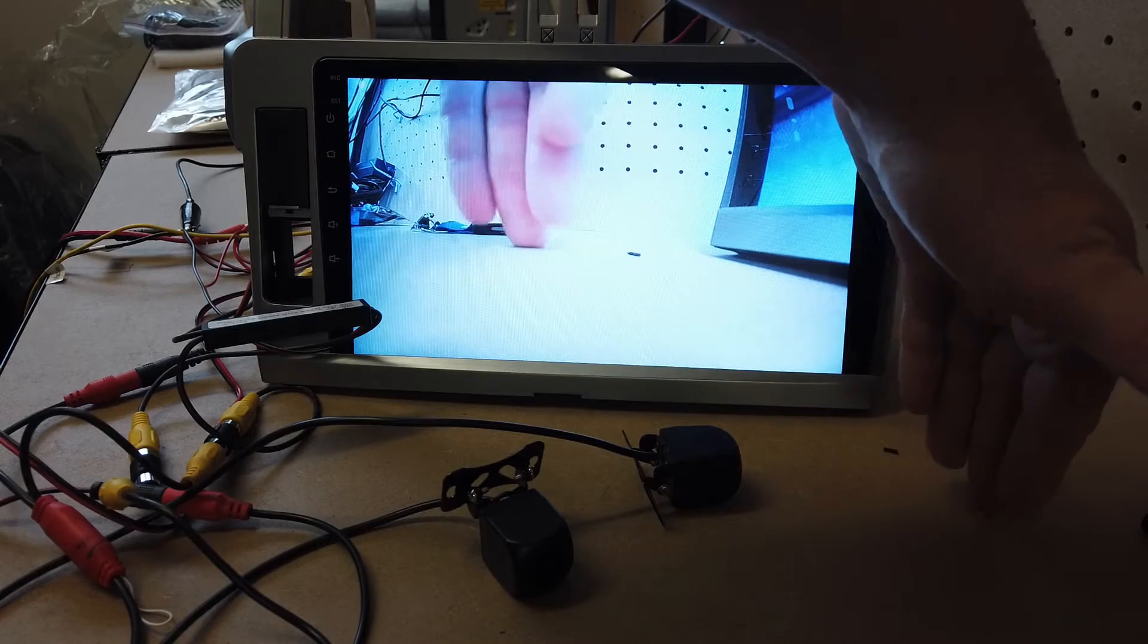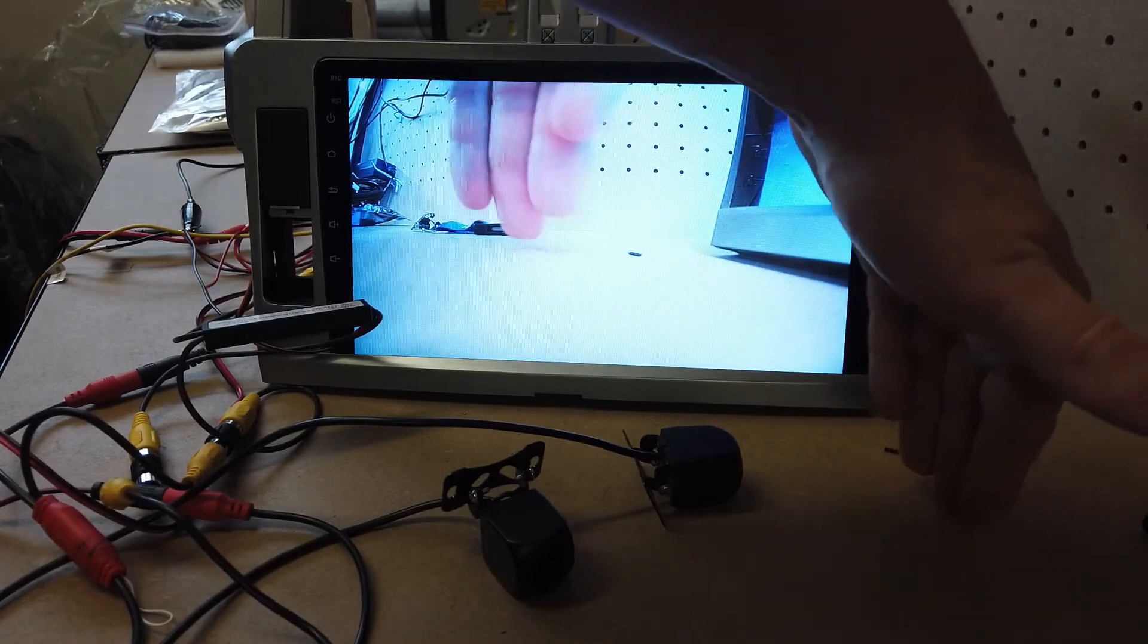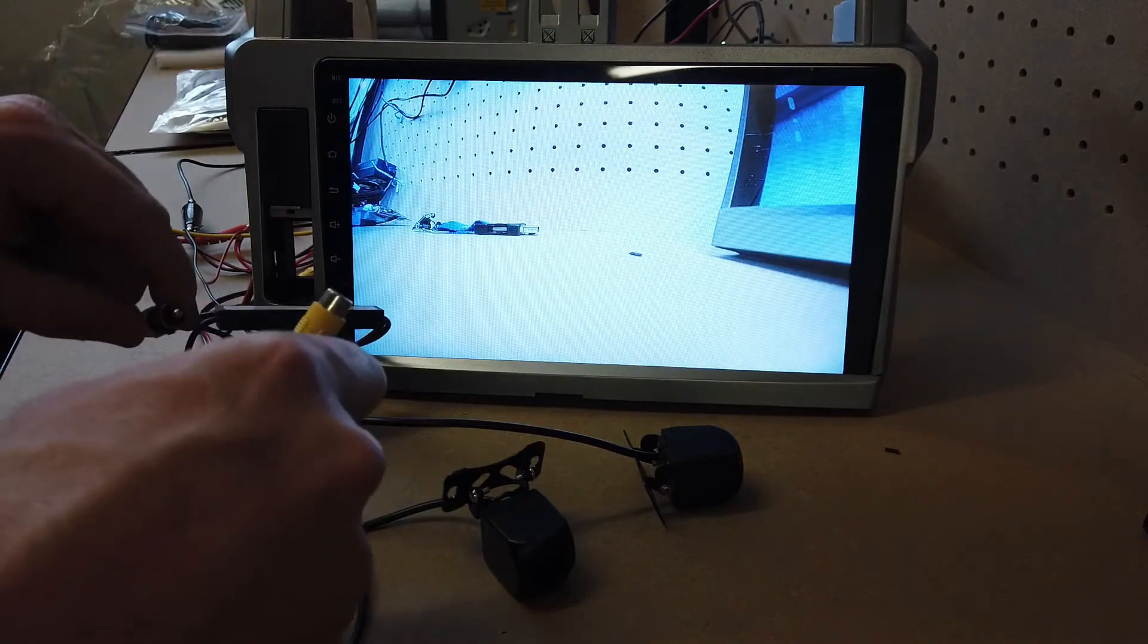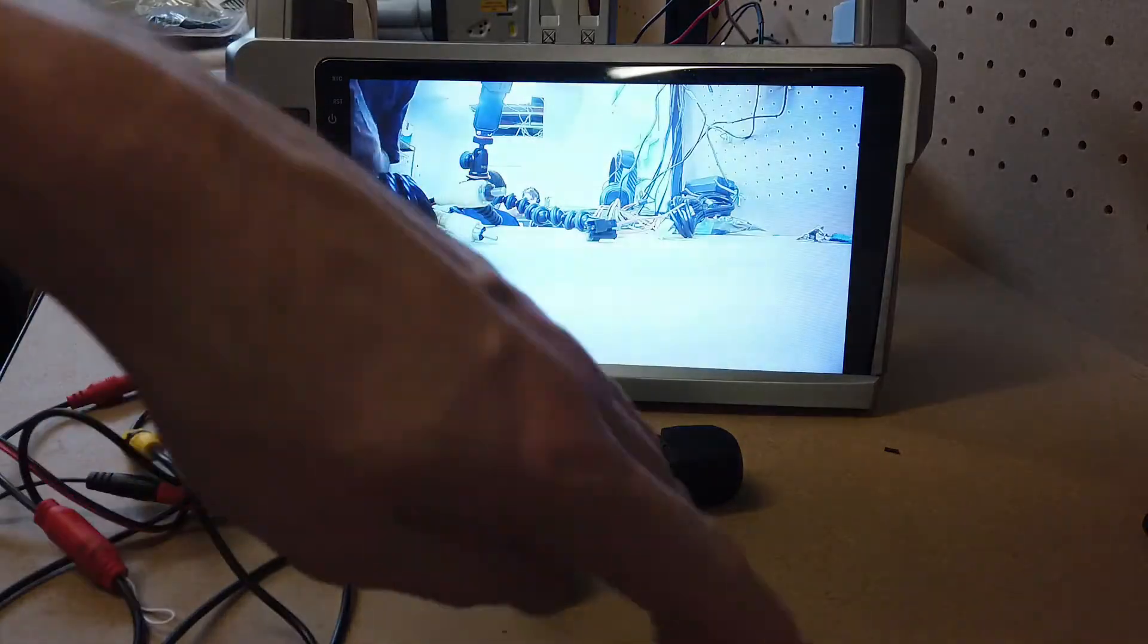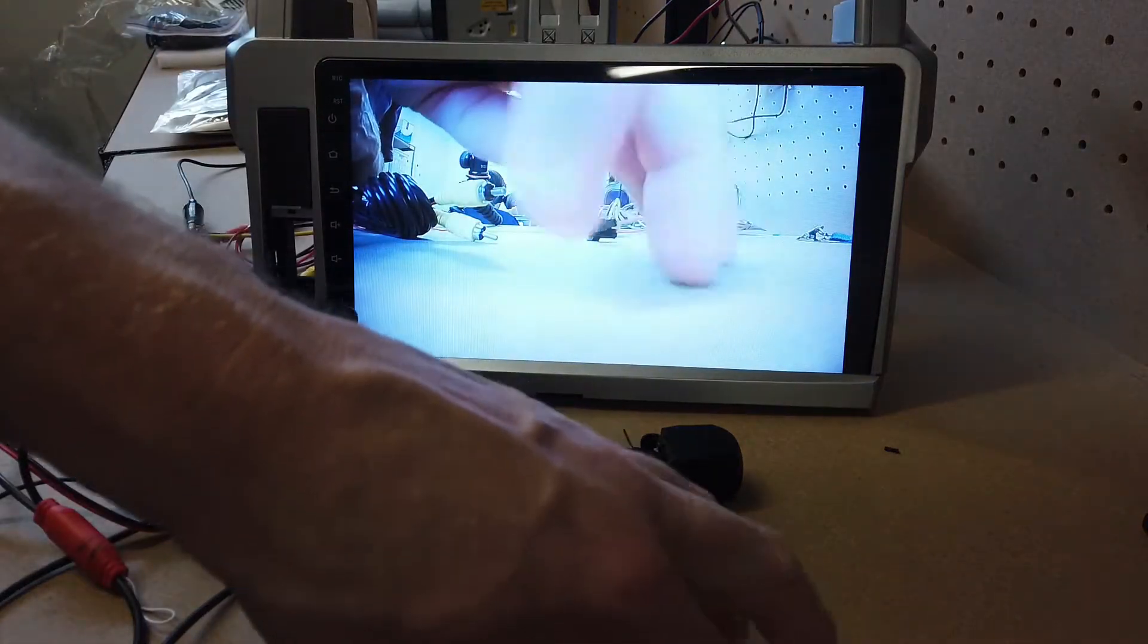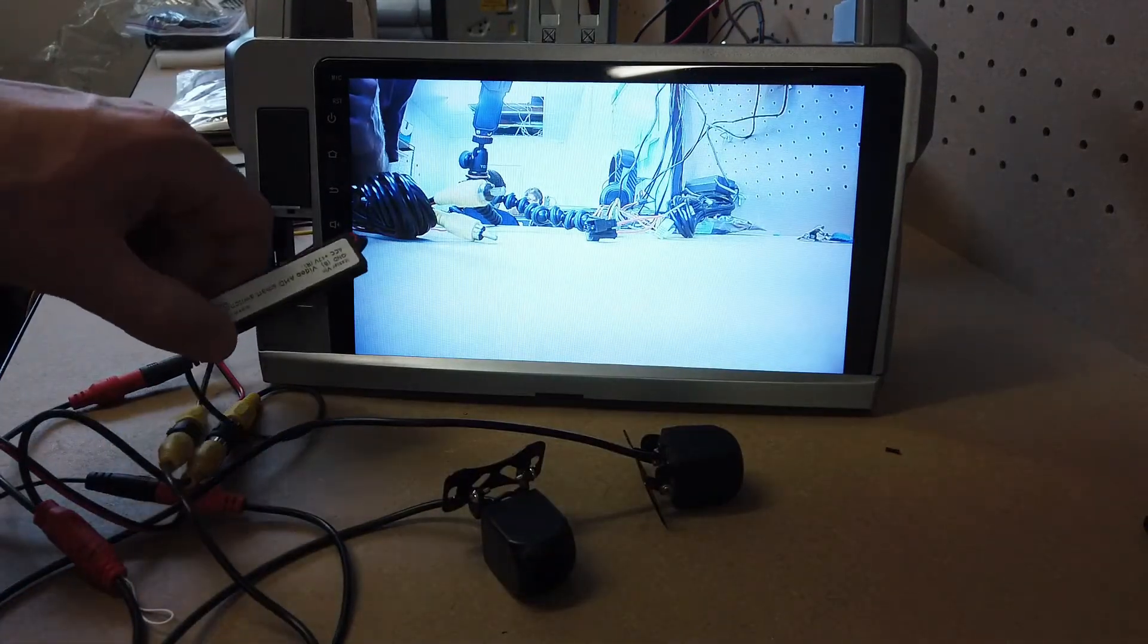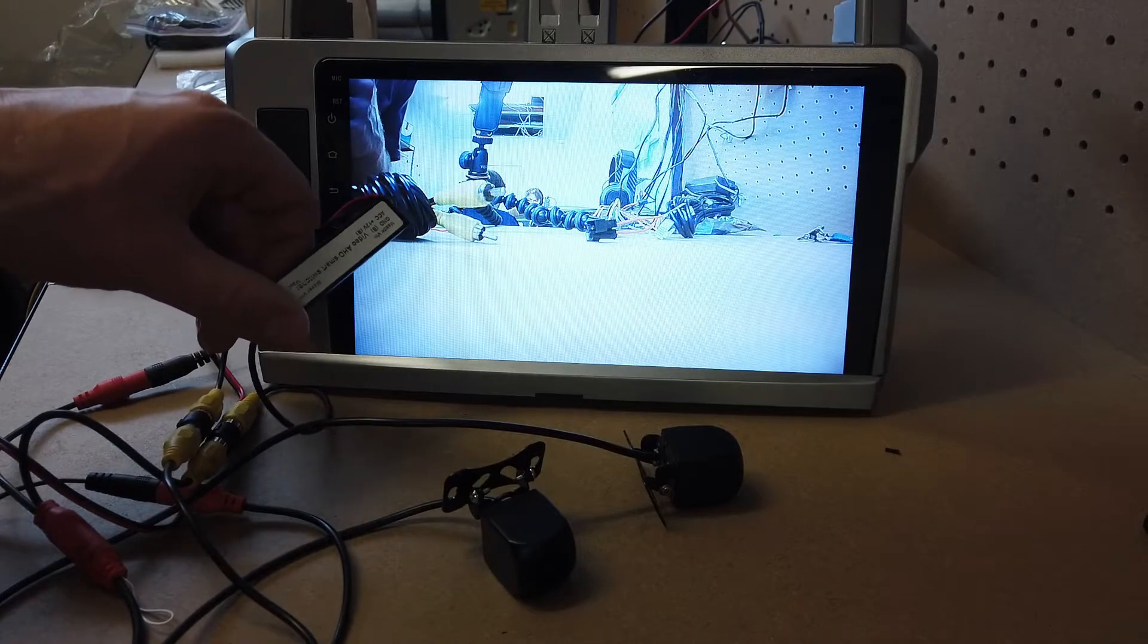So when the caravan or trailer isn't connected, the car camera will show. When we connect them, the caravan or trailer camera is going to show. That's just an easy smart connector.